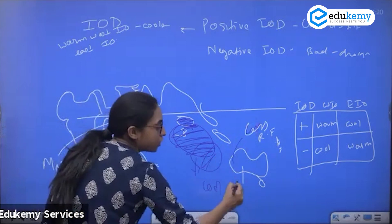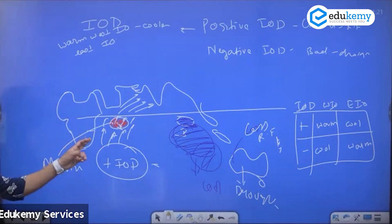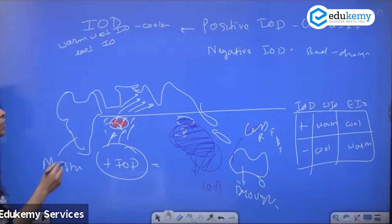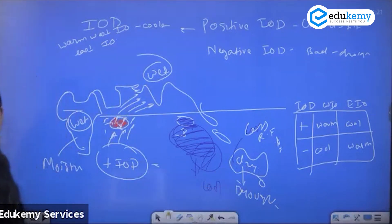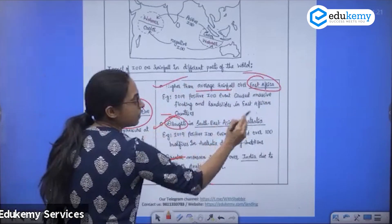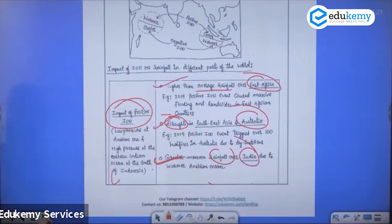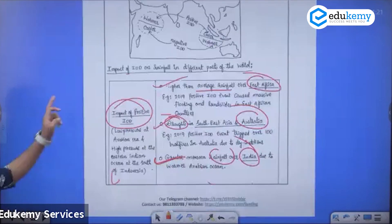The western warm region brings wet conditions to East Africa as well. So positive IOD results in: wetter conditions in East Africa, more rainfall in India, and drought conditions in Australia and Southeast Asia. The opposite effects occur during negative IOD.